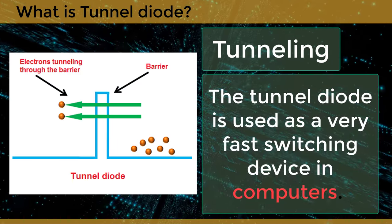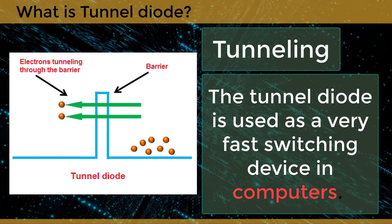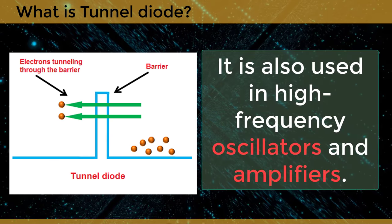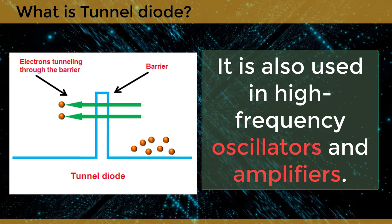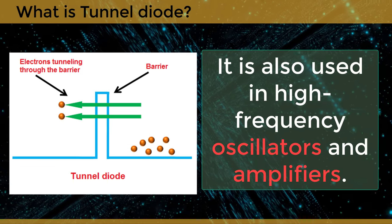The tunnel diode is used as a very fast switching device in computers. It is also used in high frequency oscillators and amplifiers.